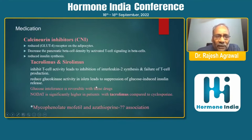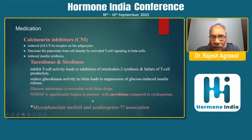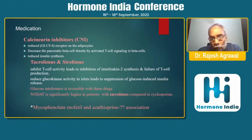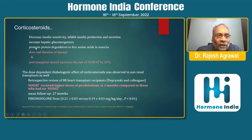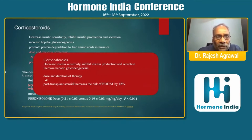Regarding medications, glucose intolerance is reversible with calcineurin inhibitors, tacrolimus, and sirolimus. NODAT is significantly higher in patients on tacrolimus as compared to cyclosporine, which has an impact on management. Patients who develop NODAT may need to switch from tacrolimus to sirolimus. Regarding steroids, dose and duration of therapy are important — post-transplant steroid dose increases the risk of NODAT by 42%.